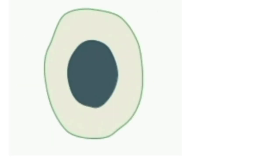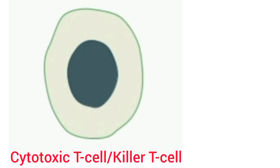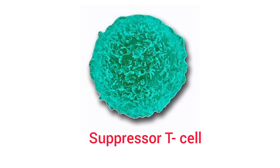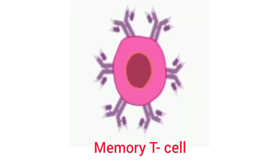Number two are the cytotoxic T cells or killer T cells, also called CD8 cells because of CD8 molecules on their surface. Number three are the suppressor T cells, and number four are the memory T cells. After transformation, all types of T lymphocytes leave the thymus and are stored in the lymphoid tissues of the lymph nodes, the spleen, bone marrow, and the gastrointestinal tracts.